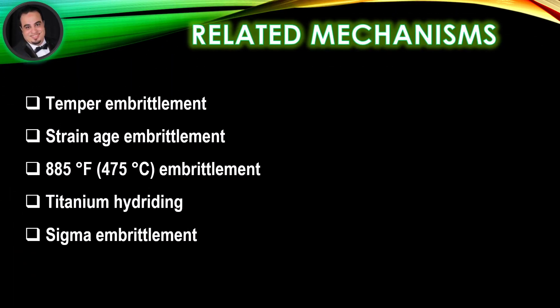Related mechanisms to brittle fracture include: temper embrittlement, strain age embrittlement, 885°F embrittlement, titanium hydriding, and sigma embrittlement.